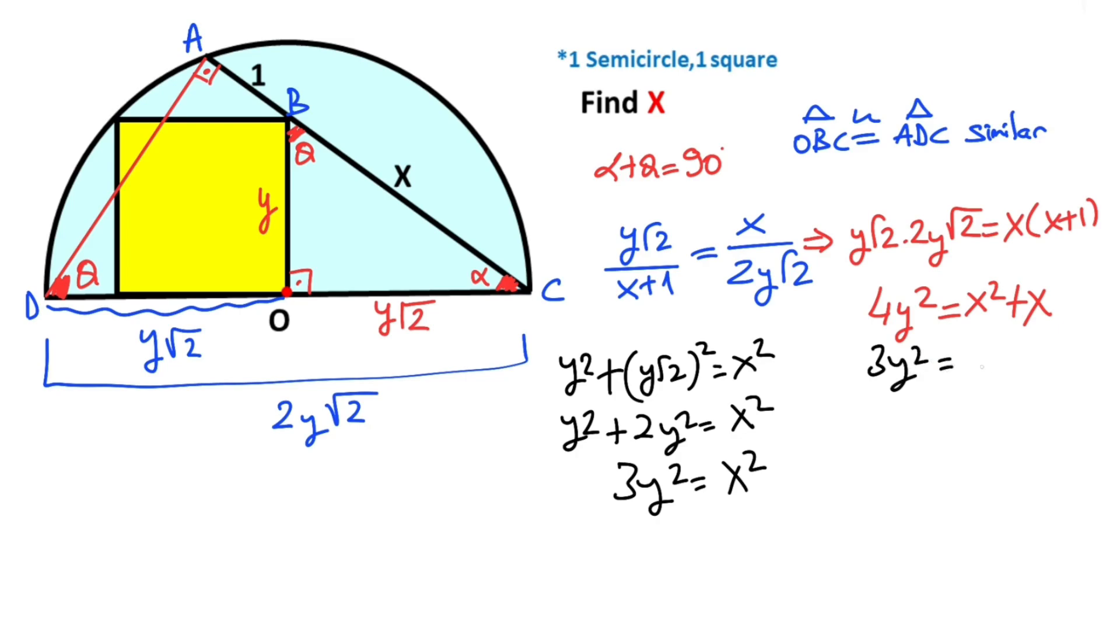Now notice that if you multiply the first equation by 3 and the second equation by 4, these two equations become equal to each other. So 12y² = 3x² + 3x, and the second equation: 12y² = 4x².